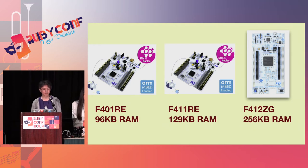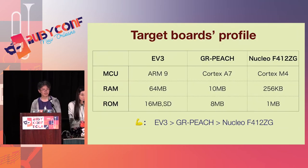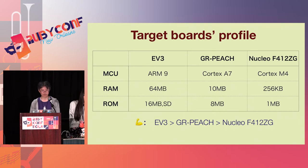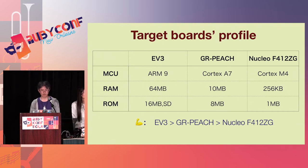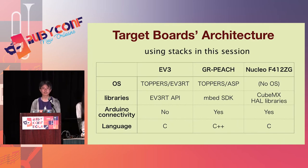This table shows the profile of our boards. The architecture of EV3 is a bit old but very powerful, like an old Raspberry Pi. The performance of GR Peach is like a smartphone. Nucleo consumes much less battery. Cortex-M4 is a typical microcontroller but RAM is a bit small.